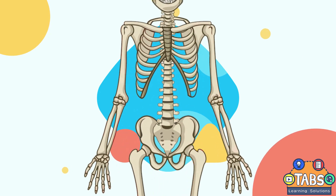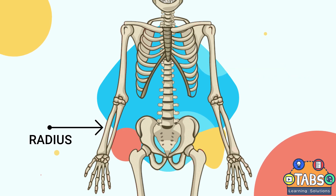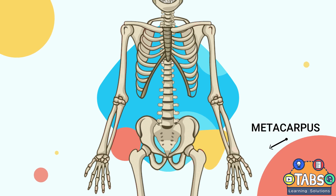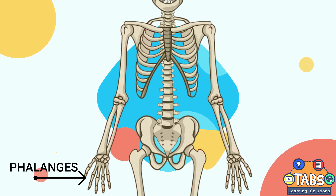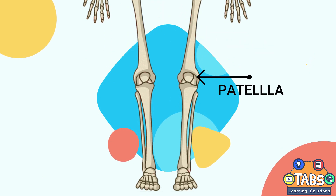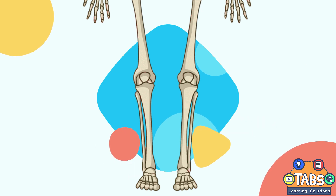The upper limb is composed of the clavicle, scapula, humerus, radius, ulna, carpus, metacarpus, and phalanges. While the lower limb is composed of the femur, patella, tibia, fibula, tarsals, metatarsals, and phalanges.